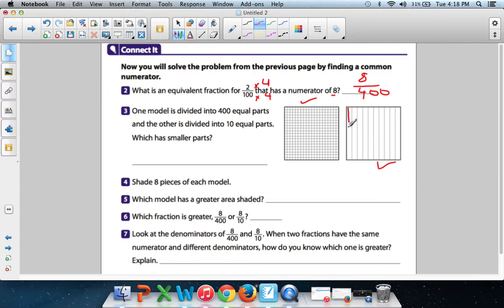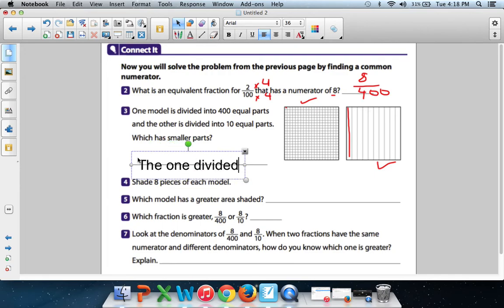Let's see. Well, that's how big a part is for that one. And that's how big a part is for that one. So which one has smaller parts? The one divided into 400? Or the one divided into 10? Take a look and you will see. Smaller parts. The one divided into 400.